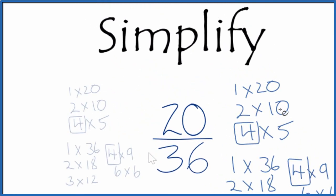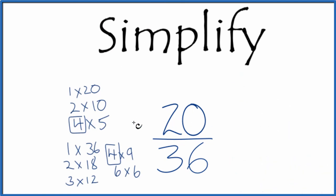Let's move this over here. We divide 20 by 4, we get 5. We divide 36 by 4, we get 9, and we've simplified 20/36 down to 5/9.